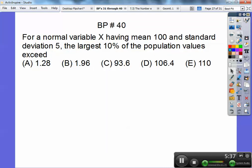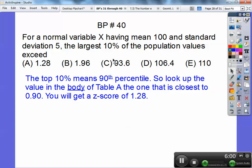For normal variable X having a mean of 100 and a standard deviation of 5, the largest 10% of the population exceeds... Well, if the largest 10%, remember our Z score table? The Z body, the body of the Z score table tells me my percentages. So if it's my top 10%, that means the Z table is everything to the left. So look in the body for the one that's 90%, the one that's closest to 90%. So look in the body and then scroll over and you'll find out your Z score is 1.28.